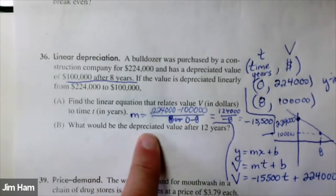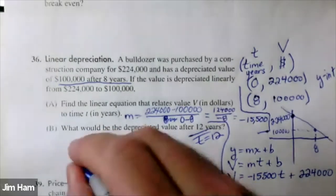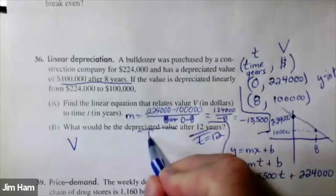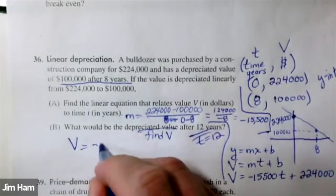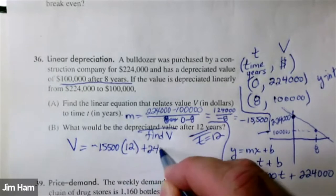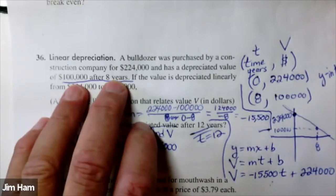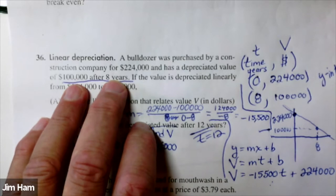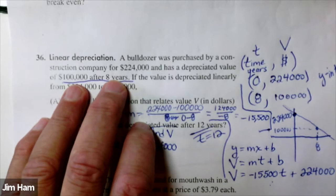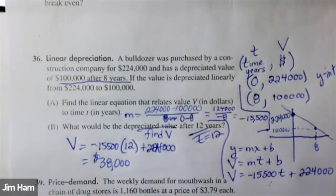Then it says: what would be the depreciated value after 12 years? The bulldozer starts at $224,000; after eight years it's only worth $100,000. Twelve years is a value of our variable t, and we find v when t equals 12. After eight years it was $100,000. So after 12 years, that's four more declines of $15,000 — so that's going to take it down $62,000. After 12 years, this bulldozer is only worth $38,000.